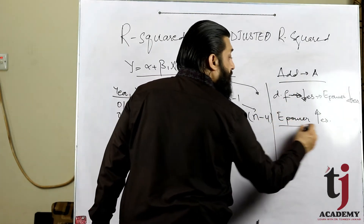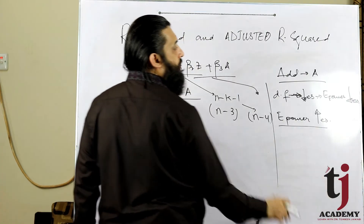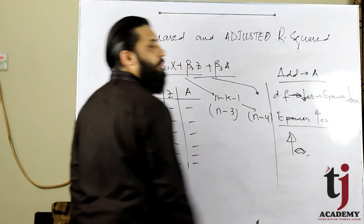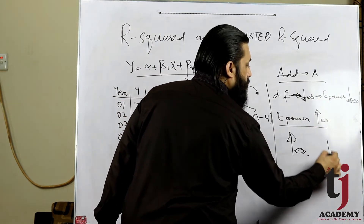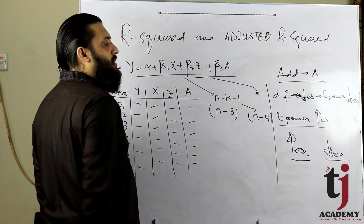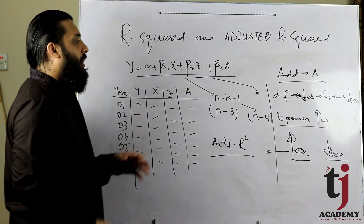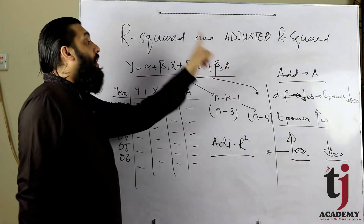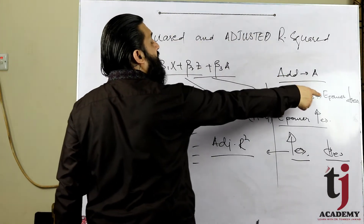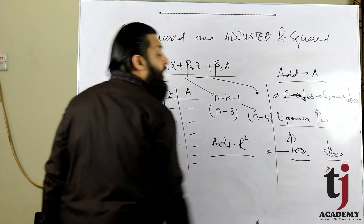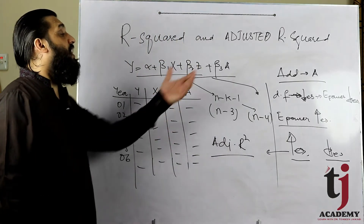اب یہاں دو چیزیں آ رہی ہیں: model کی explanatory power ایک aspect سے کم ہو رہی ہے اور دوسرے aspect سے زیادہ۔ اگر relevant ہونے کی وجہ سے explanatory power increase dominant ہو جائے تو net effect positive آئے گا — یعنی adjusted R² بڑھ جائے گا۔ اور اگر increase اتنی نہیں ہوئی جتنی power کم ہوئی تو adjusted R² کم ہو جائے گا۔ یہ value adjust ہو رہی ہے adjusted R² کی۔